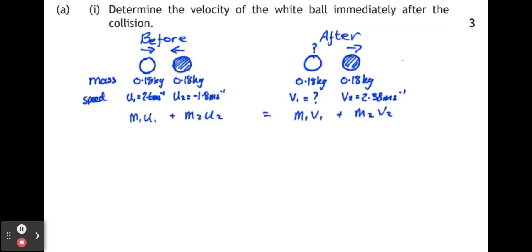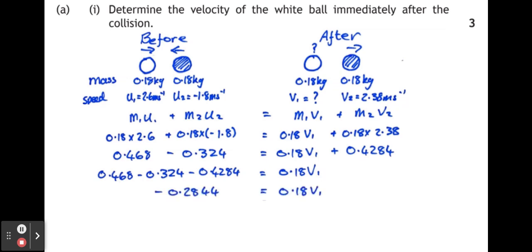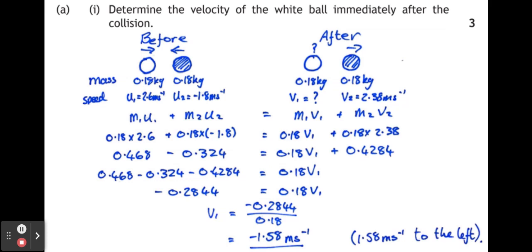In any collision, total momentum before equals total momentum after. So: (mass × velocity of white) + (mass × velocity of black) before = (mass × velocity of white) + (mass × velocity of black) after. Putting the numbers into the formula and working through the algebra gives an answer of minus 1.58 metres per second, meaning the white ball has rebounded and is now moving at 1.58 metres per second to the left.